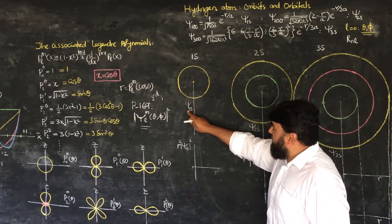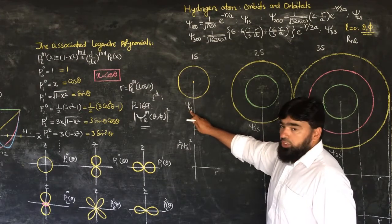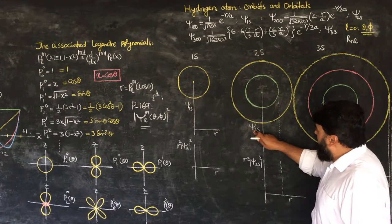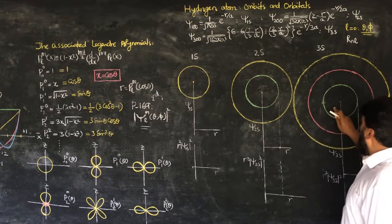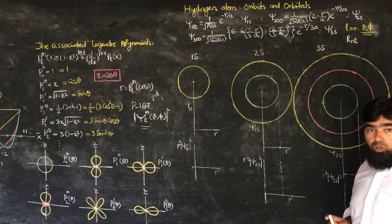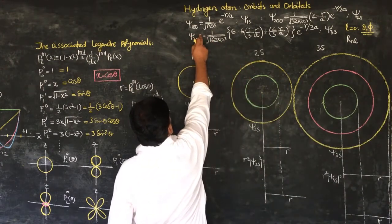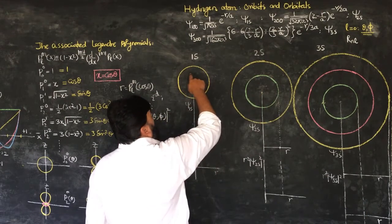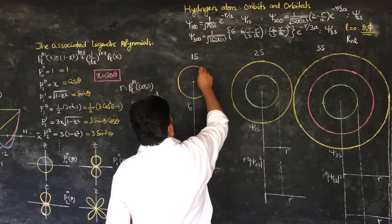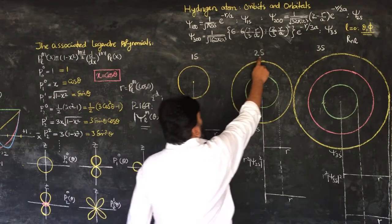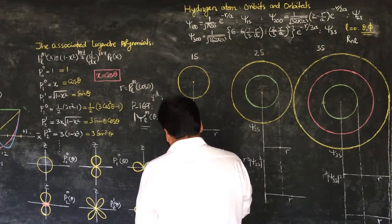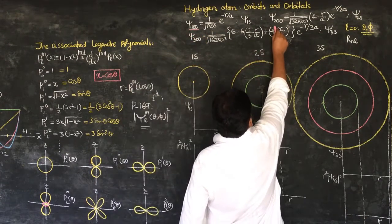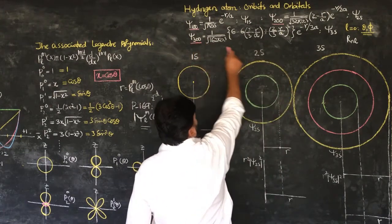So psi_1 corresponds to R_10. Similarly, psi_2 corresponds to n equal to 2 and l equal to 0, and psi_3 corresponds to n equal to 3 and l equal to 0. For the three principal orbits 1, 2, and 3, we focus on the s orbital, where l equals 0. So we are working with psi_100, psi_200, and psi_300.